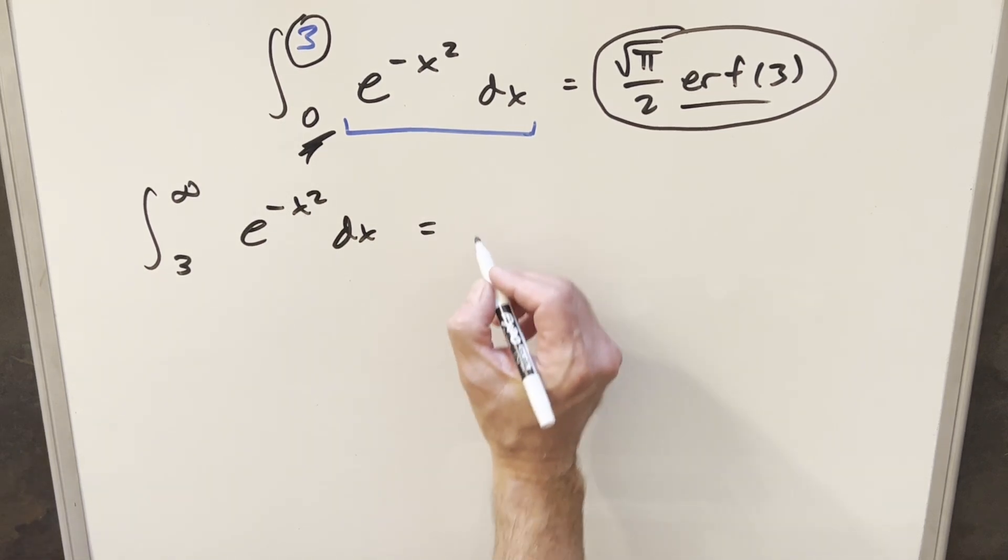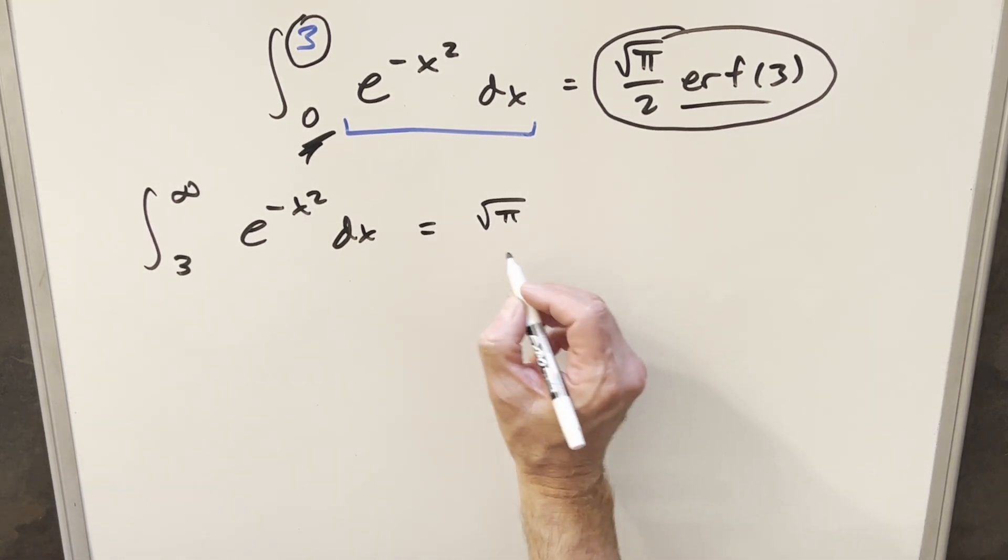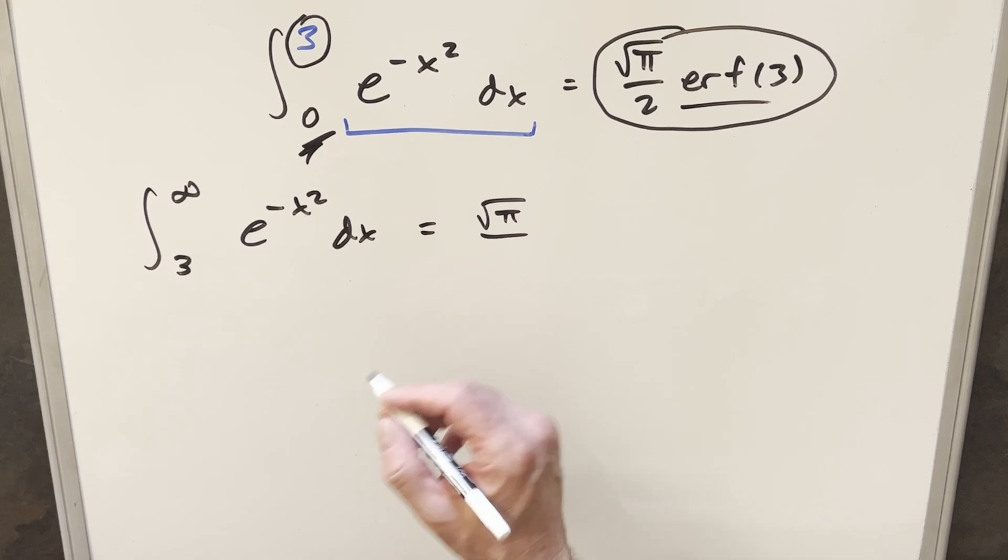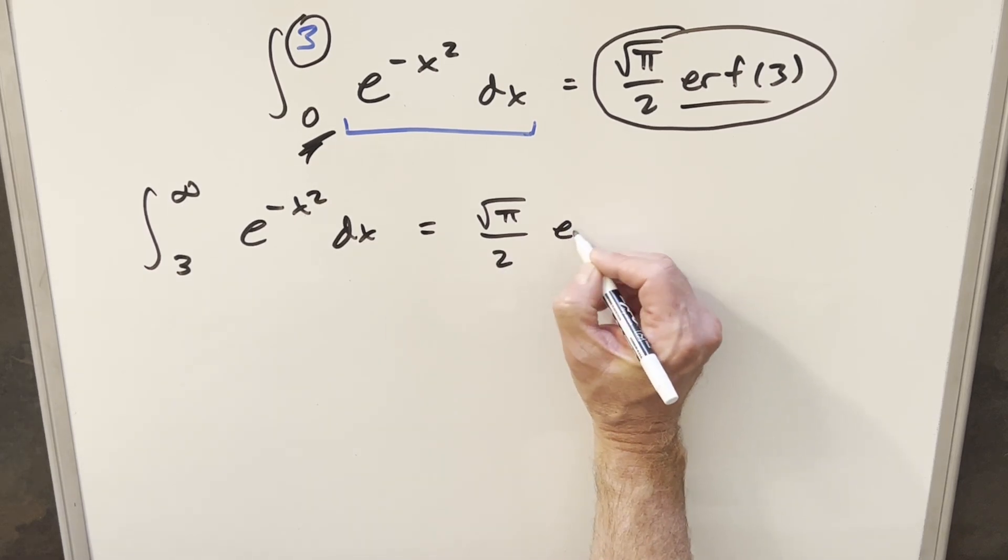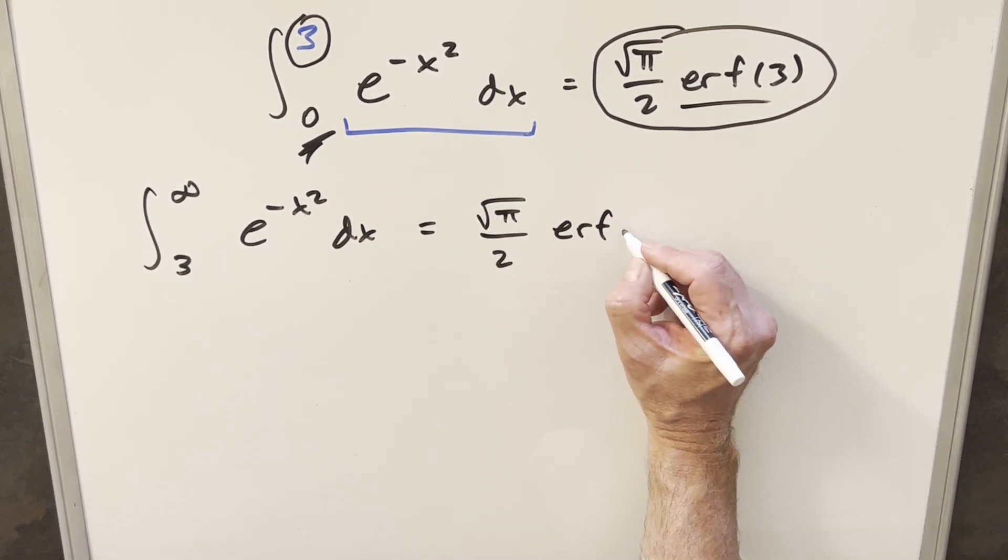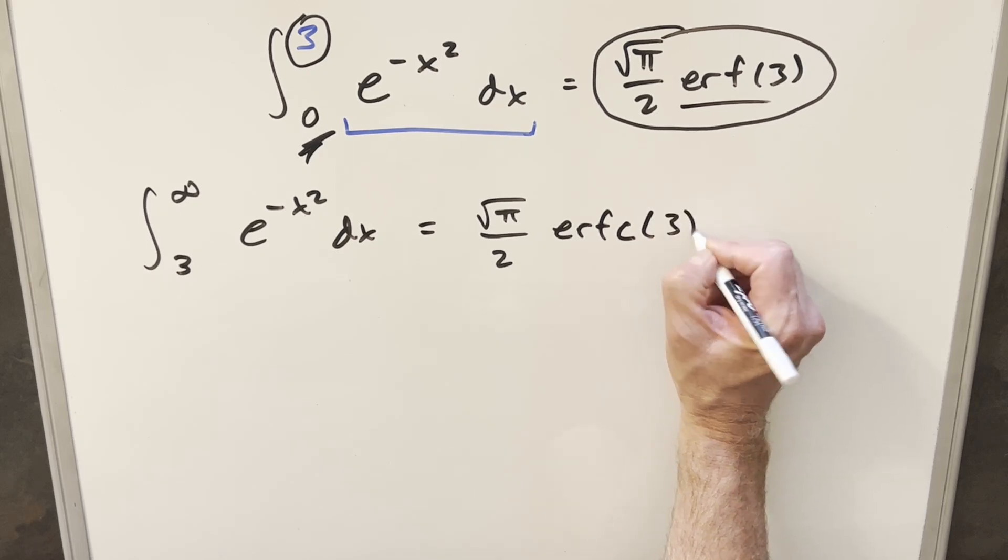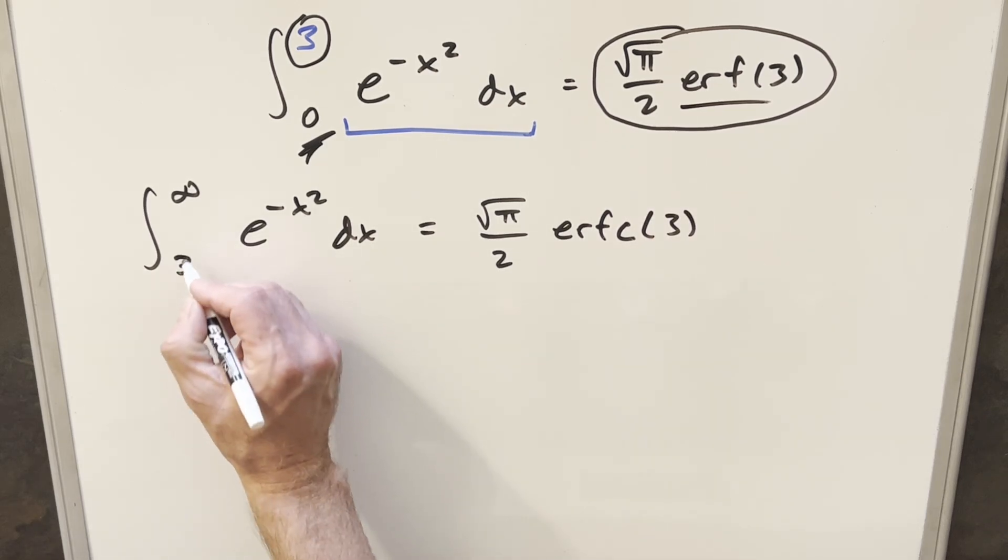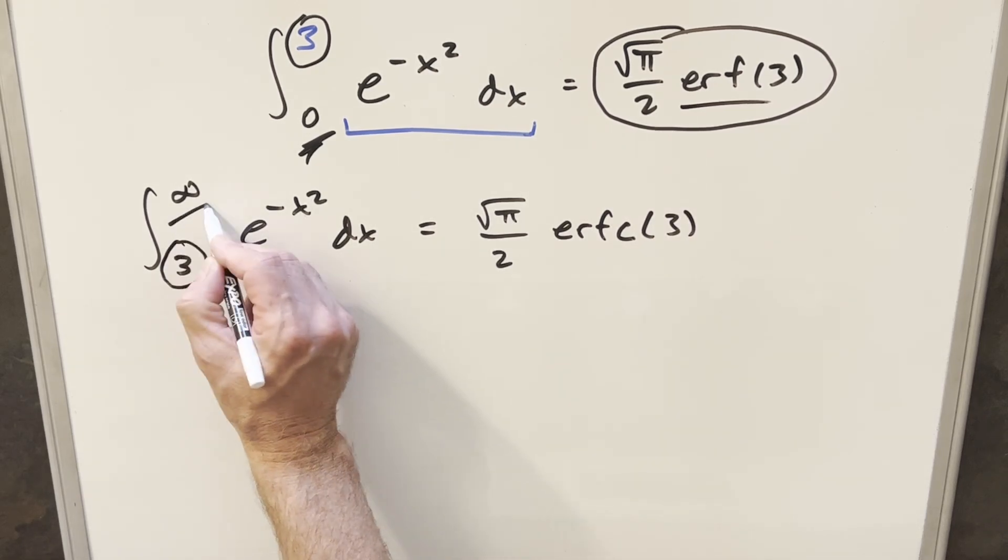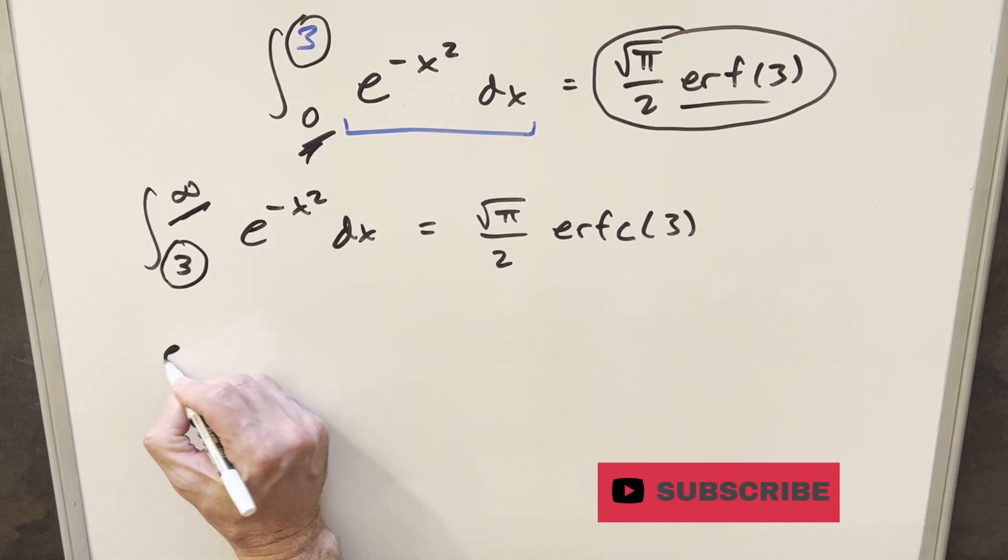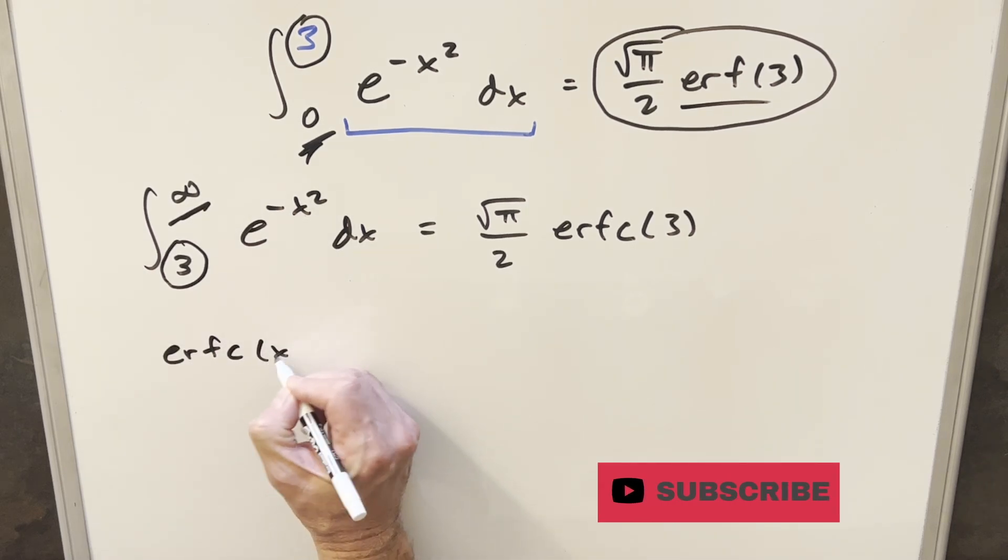And this right here has a really similar definition to this. It's just going to be in terms of the complementary error function, which we write as ERFC on there at 3. And for this one, we're using as the input the lower bound, and this has to go to infinity because our definition for the complementary error function,